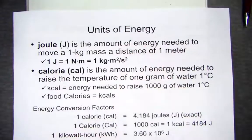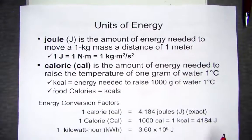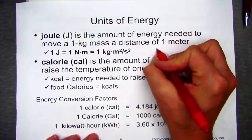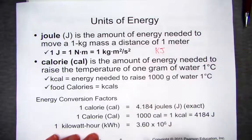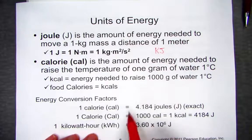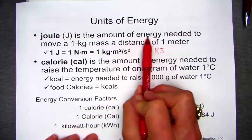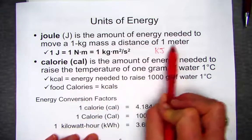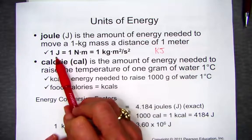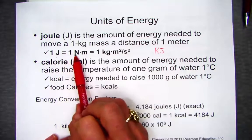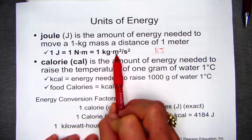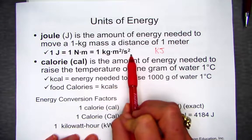The units of energy — most commonly we use the metric unit known as the joule. Often the joule is quite a small unit, so we often talk about kilojoules of energy. It's defined as the amount of energy needed to move a one-kilogram mass a distance of one meter. One joule is the same as one newton-meter, which is equal to one kilogram meter squared per second squared.